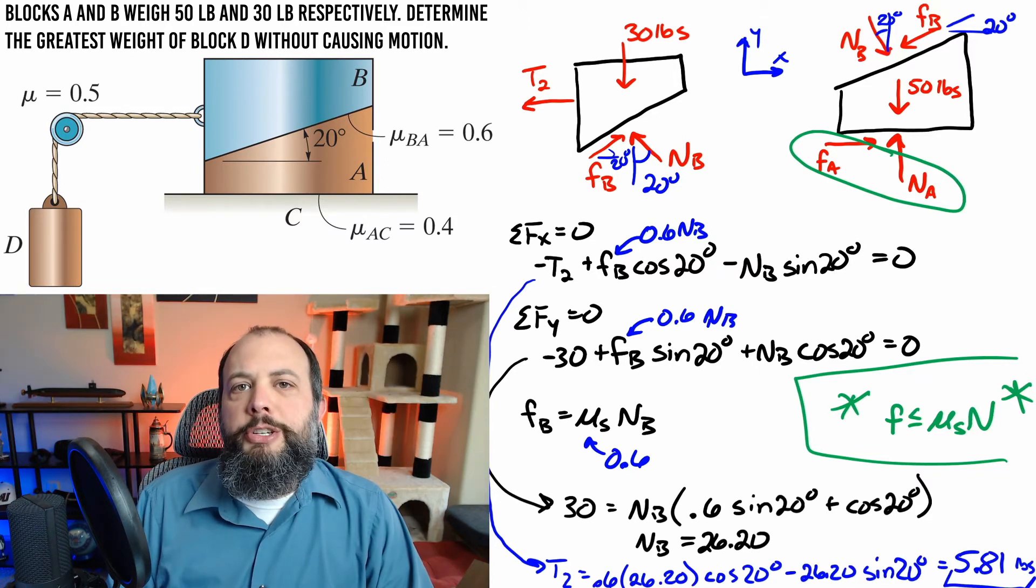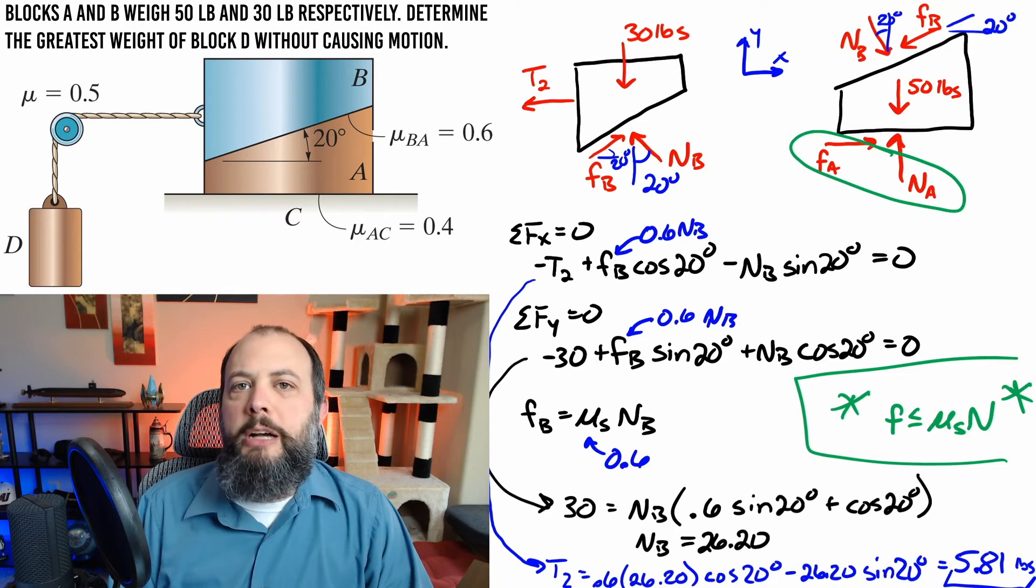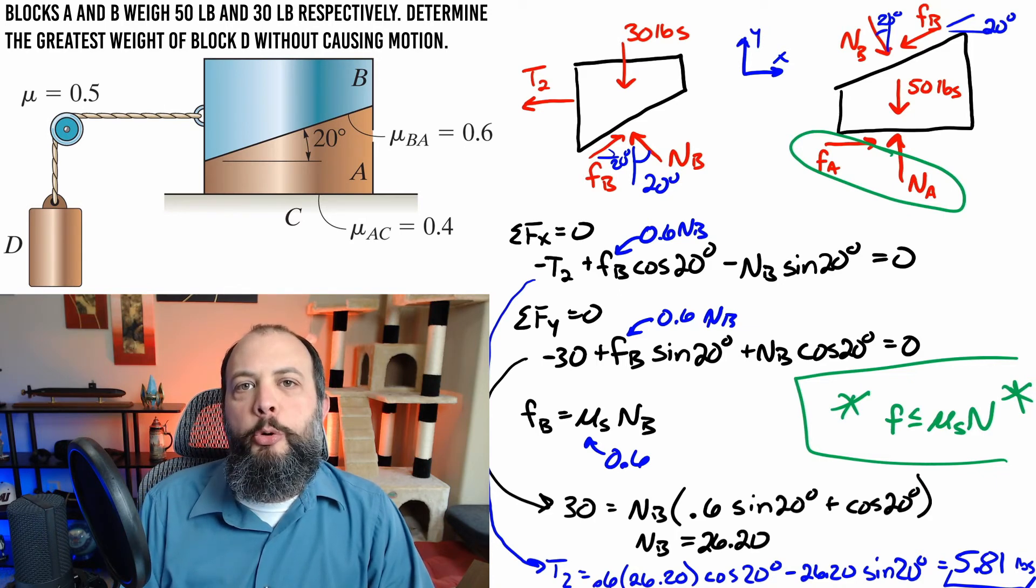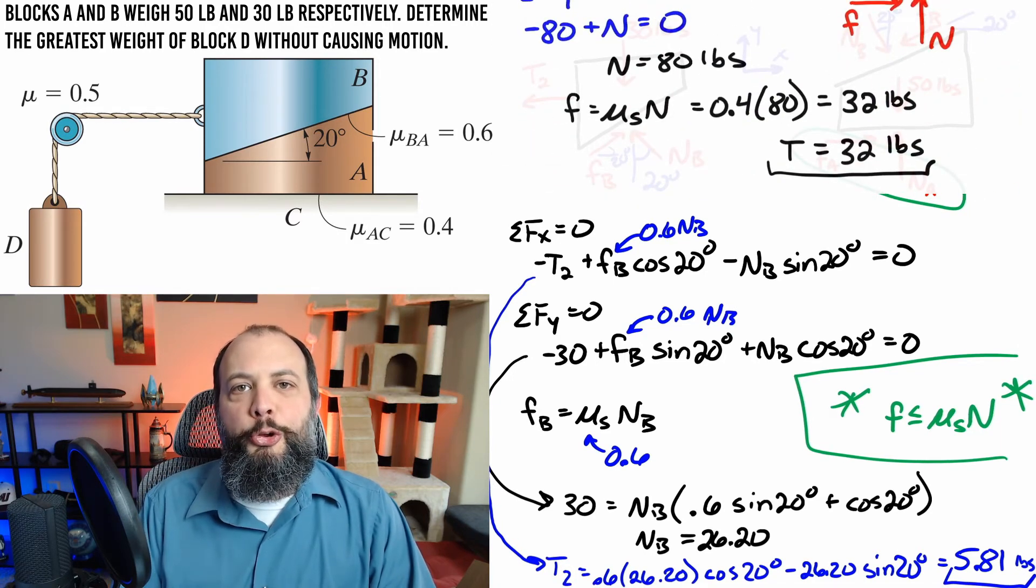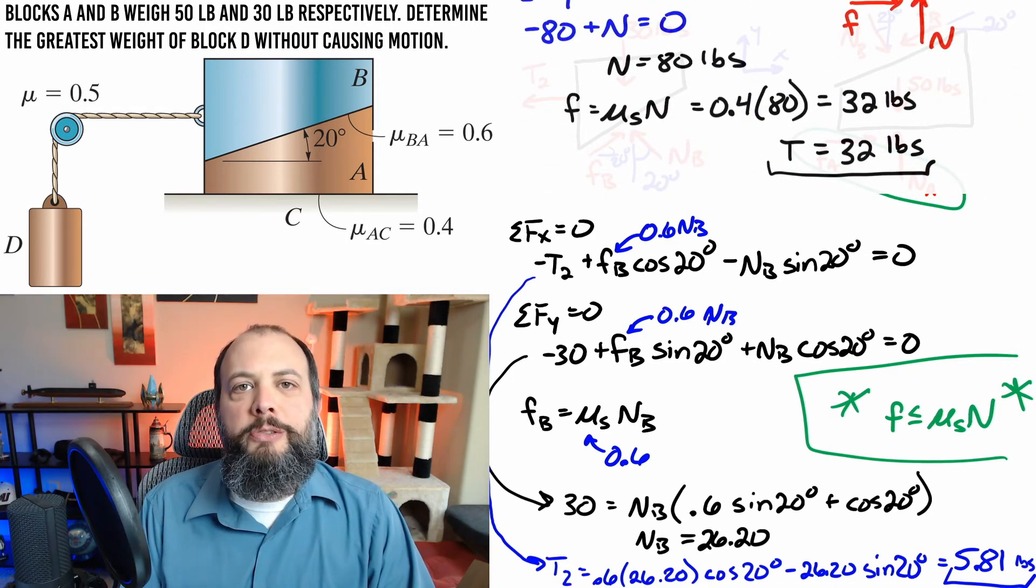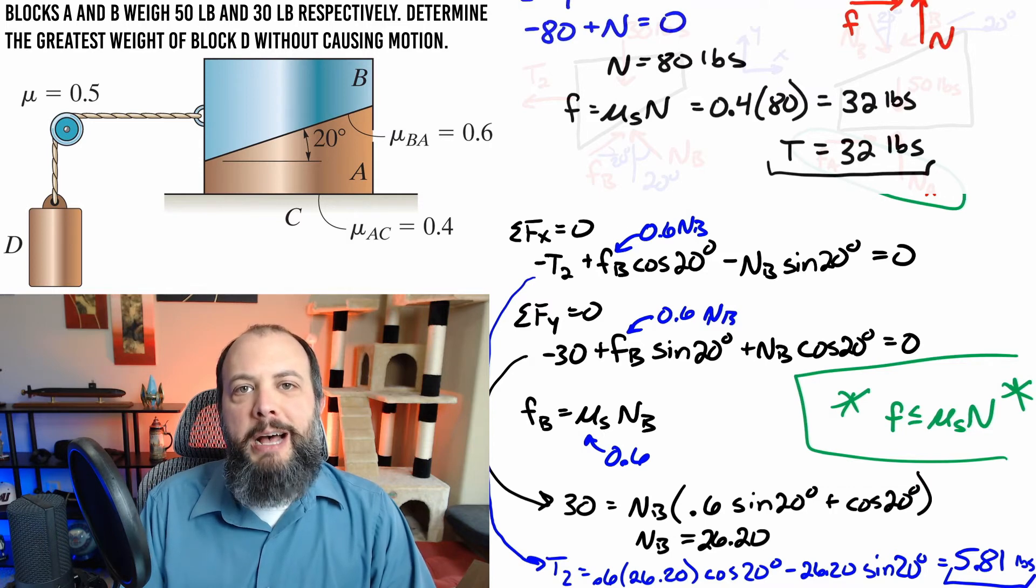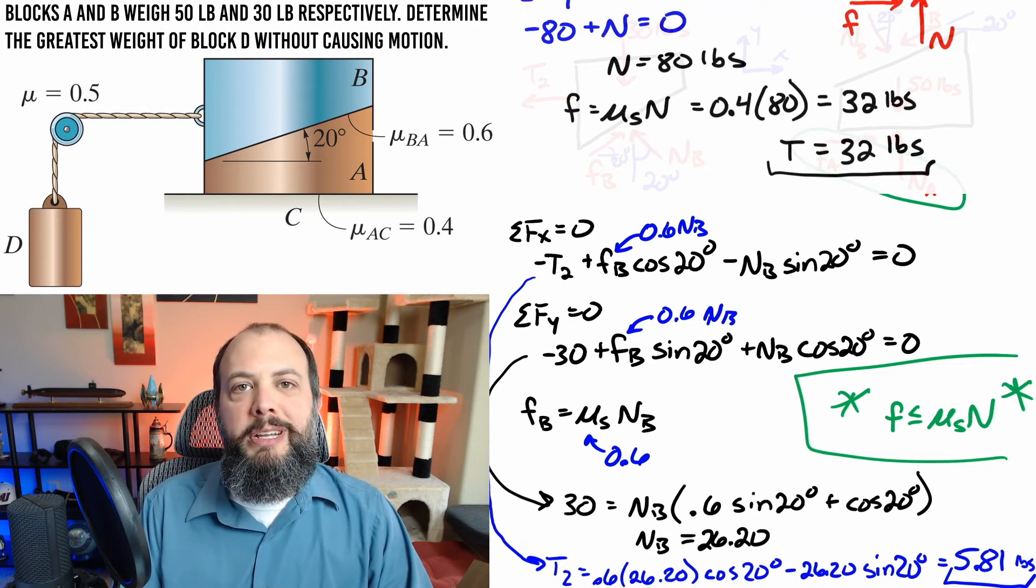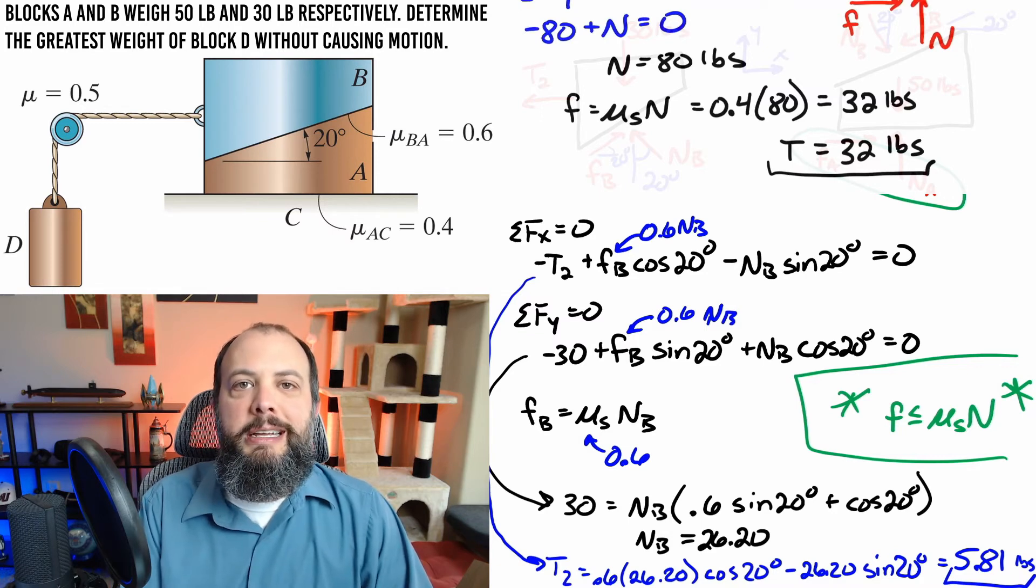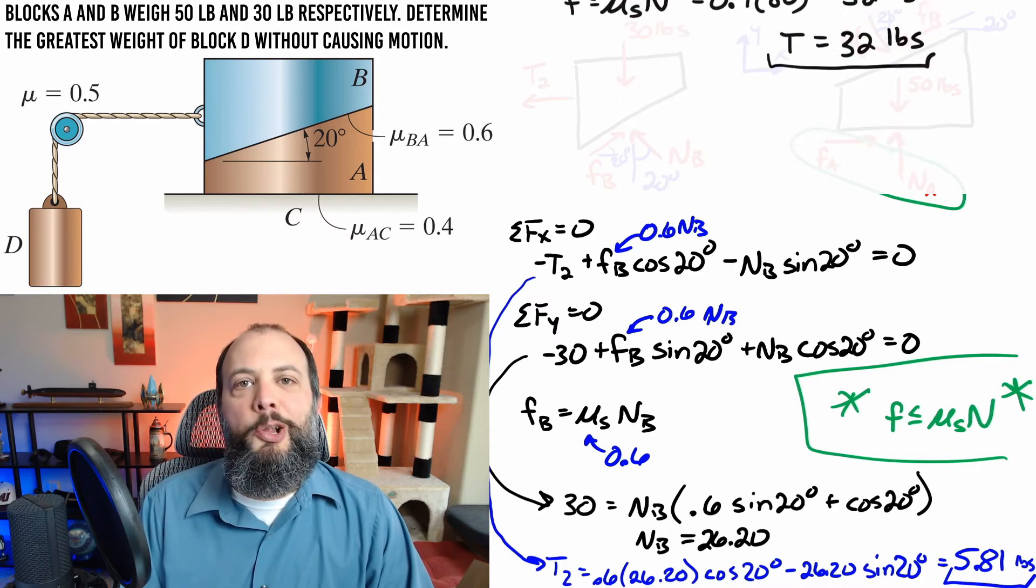So from the y direction equation we get 26.2 pounds for the normal force and from the x direction equation 5.8 pounds for tension. So in order to cause the blocks to slide across the ground required 32 pounds of force and requiring the top block to slide across the bottom only took 5.8 pounds of force, then obviously that 5.8 pounds would be reached first and so motion between the two blocks themselves would happen first and then block A would still stay stuck along the ground.